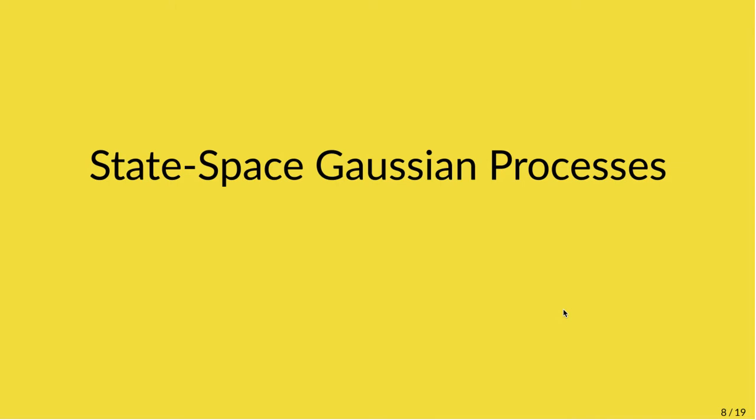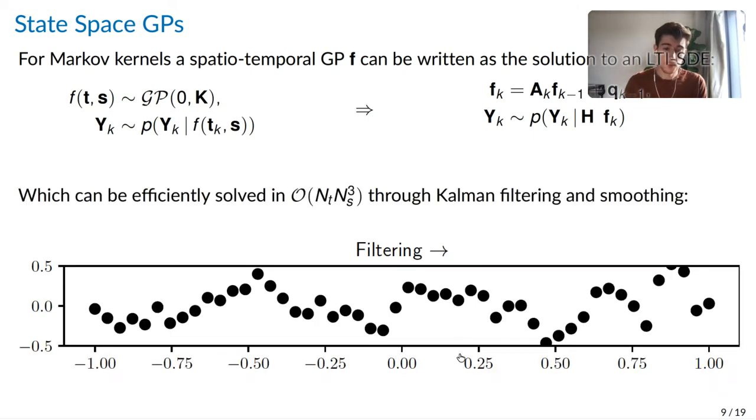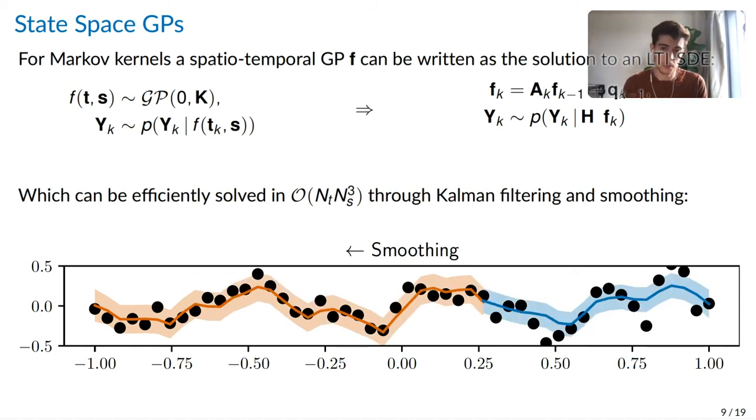So an alternative approach to scalable Gaussian processes are state-space GPs. State-space GPs exploit the Markov properties of certain kernels to rewrite the GP as a solution to a linear time invariant SDE. On the left hand side, we have the standard graphical model of a GP. And the right hand side, we have the linear time invariant SDE form of this GP. Once it's in this form, it can be solved by running a Kalman filter and RTS smoother, as demonstrated below. This leads to inference having a computational complexity that is linear with respect to time.